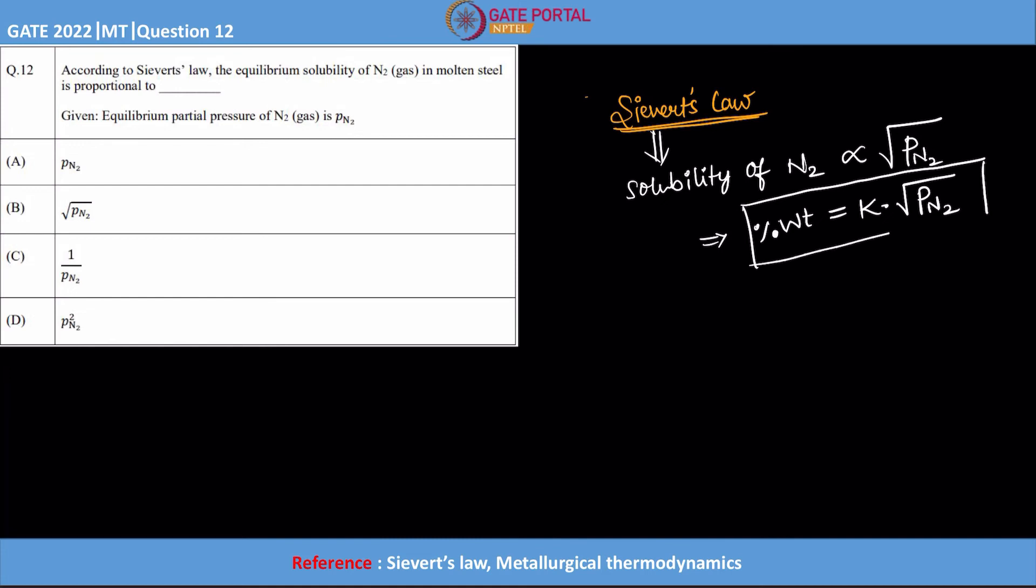This is applicable for nitrogen and hydrogen, and this is for diatomic gases. This square root is actually for diatomic gases.